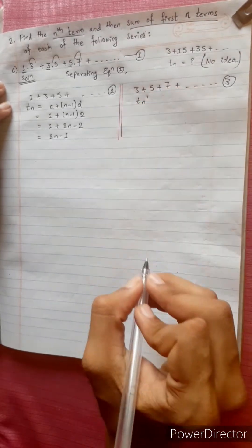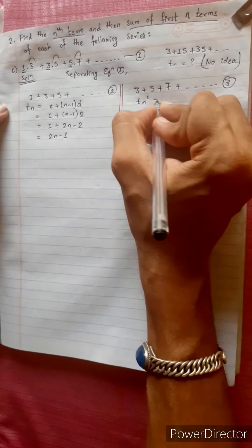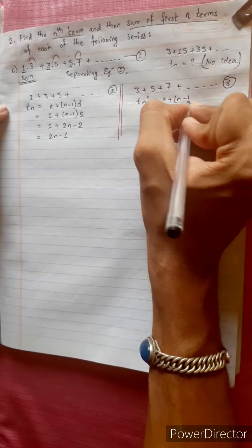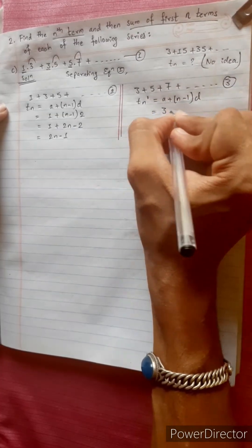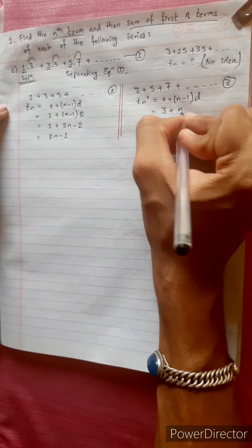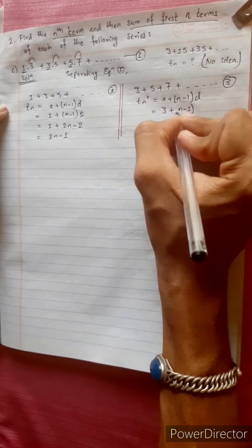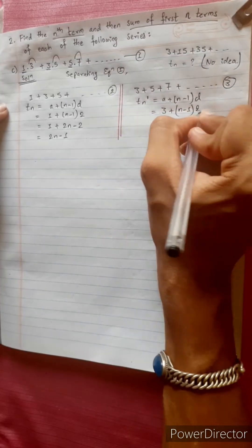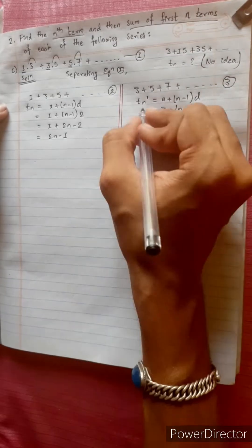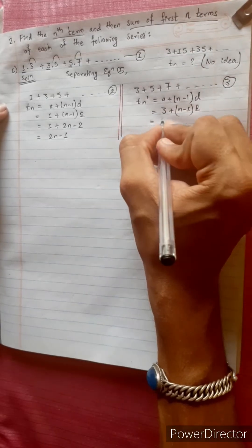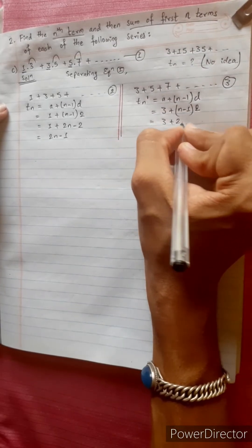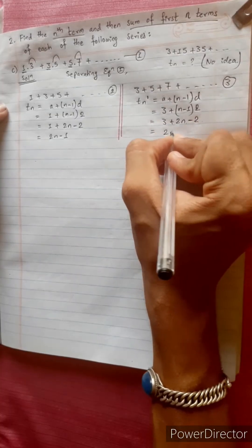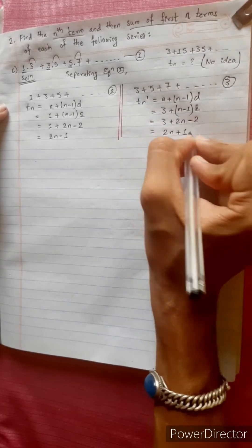Tn dash equals a plus n minus 1 times d equals 2. First term is 3, and the sequence is 3, 5, 7 with common difference 2. So Tn dash equals 3 plus 2n minus 2, which equals 2n plus 1.